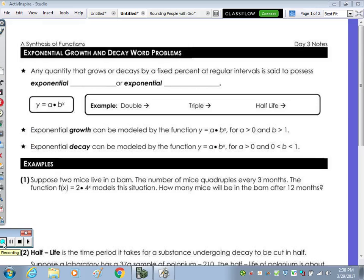At the top of the page, we're going to continue working with exponential growth and decay. We're going to take a look at, in terms of the B value, what it means to double, triple, half-life, quadruple, and so on. Any quantity that grows or decays by a fixed percent at regular intervals is said to possess exponential growth or decay.